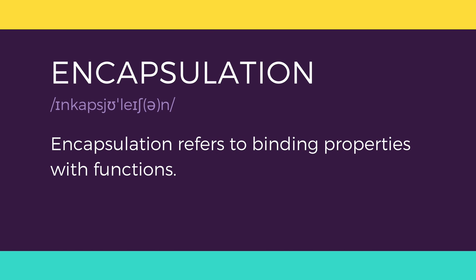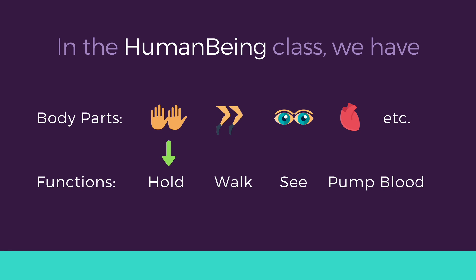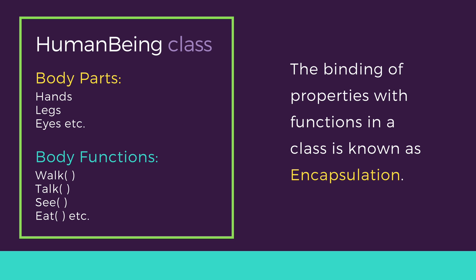Then we have encapsulation. The concept of encapsulation is a little tricky to explain with our example, but here it is: our hands help us to hold things, our legs are bound to help us walk. This binding of properties to functions is called encapsulation.